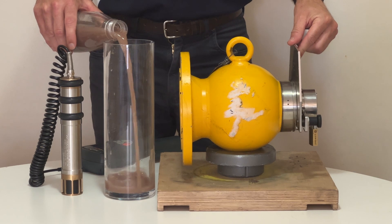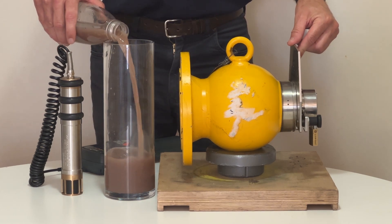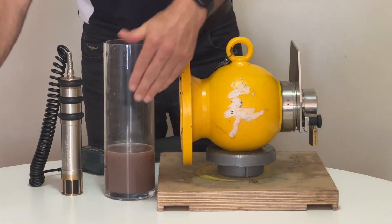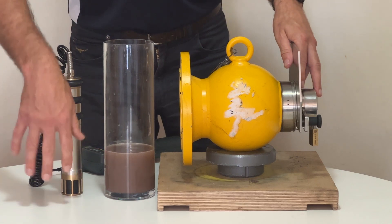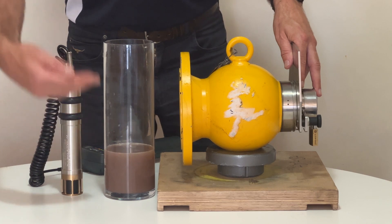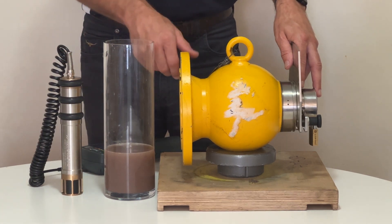As our hopper or vessel fills up with whatever the medium might be, that slurry in this case blocks the radiation beam, attenuates it, resulting in less radiation here. And this allows a processing plant to understand exactly where their level might be on that vessel and allows them to optimize their outputs.